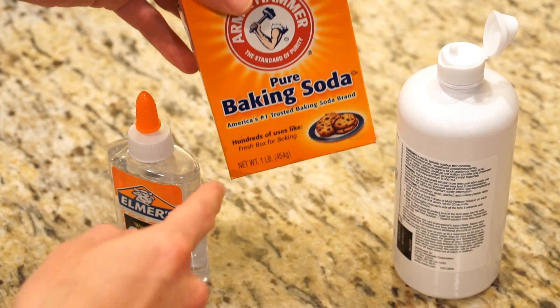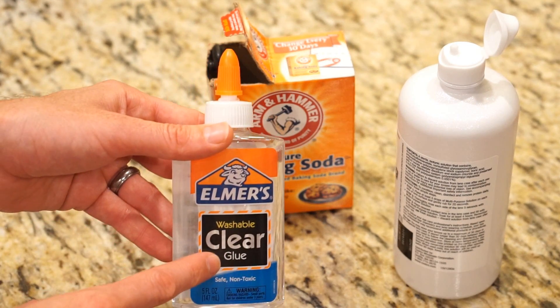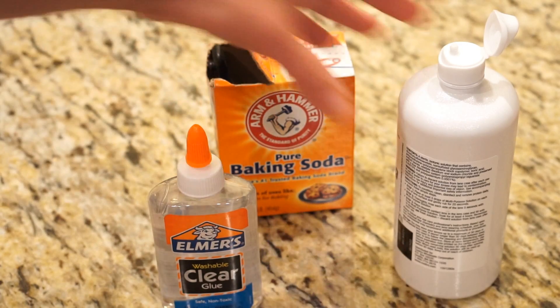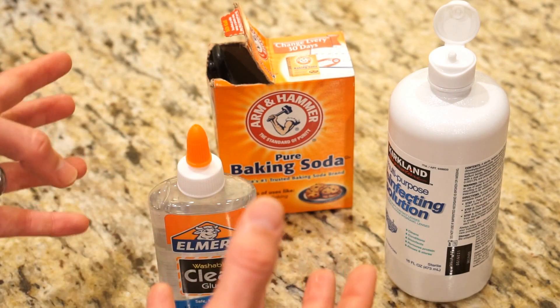So to make this I just mixed a half a teaspoon of baking soda with water and then poured five ounces of this glue in a bowl. And then you just add the multi-purpose solution until it gets the consistency that you want.